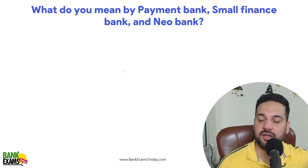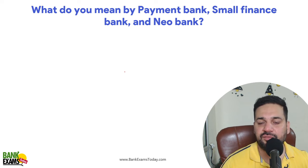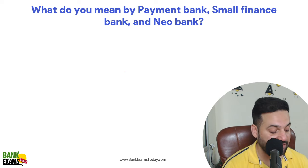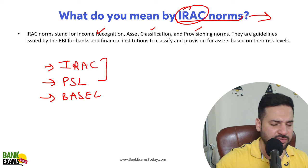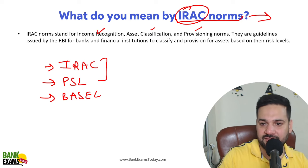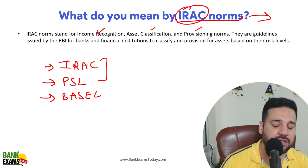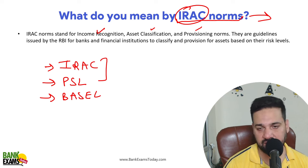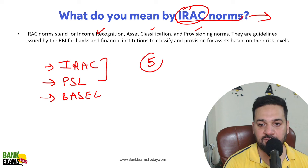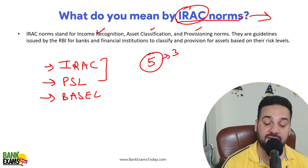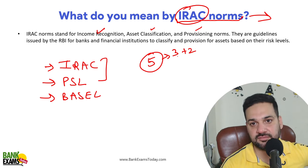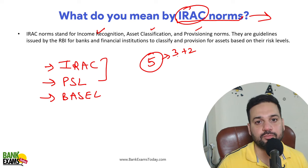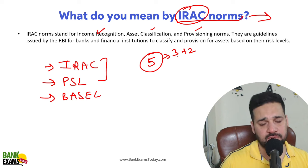If you answer the IRAC norms question well — giving the full form as Income Recognition, Asset Classification, and Provisioning norms — and explain that it is a master circular by RBI and state its purpose, let's say the panel gives five marks for this topic. That answer gets you three marks. If you also correctly answer the follow-up provisioning question, you get full five marks. If you can't answer at all, you get zero.